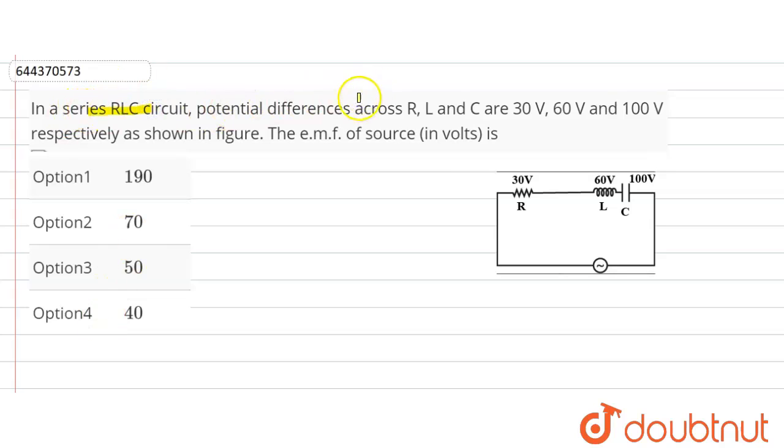In a series RLC circuit, potential difference across R, L, and C are 30 volt, 60 volt, and 100 volt respectively as shown in the figure. The EMF of the source in volts is?